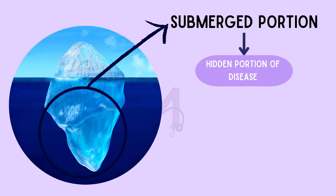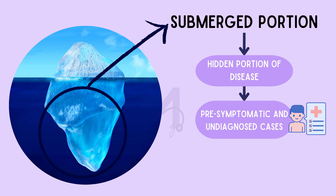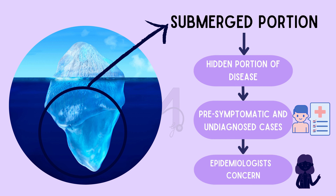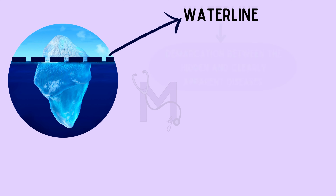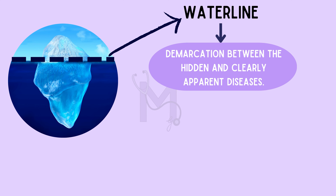Next is the submerged portion of the iceberg, which represents the hidden portion of disease like pre-symptomatic and undiagnosed cases. This part of the iceberg is what the epidemiologists are concerned with, and hence screening tests for the same are conducted. Lastly, there is the waterline, which is a clear demarcation between the hidden and clearly apparent diseases.